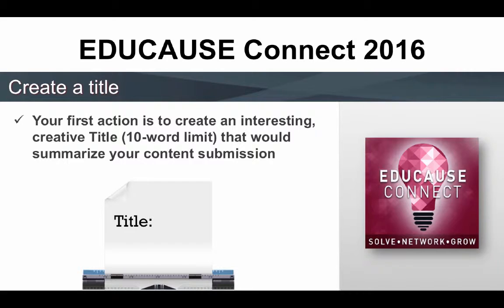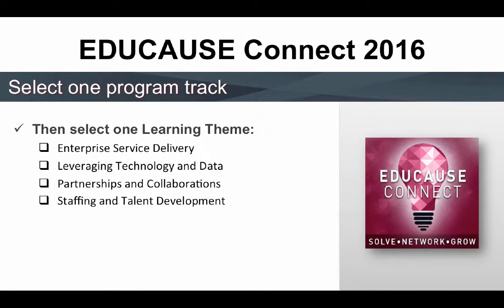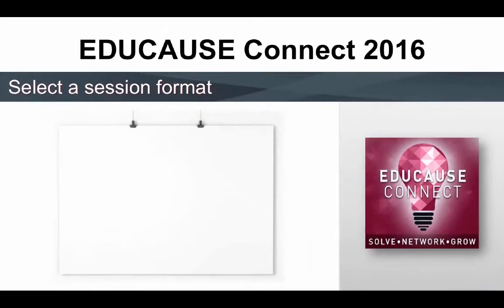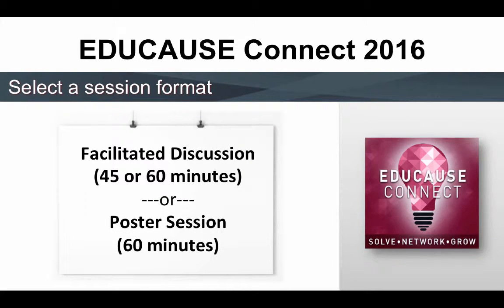Here is what you will be submitting in the call for proposal. First, a creative title that describes your area of expertise. Next, select one program track choice — which of these key learning theme IT issues do you have knowledge or experience? Then select a session format: either a facilitated session, which is 45 to 60 minutes each and involves multiple content leaders, or a poster session, which is open for 60 minutes and may involve multiple participants.